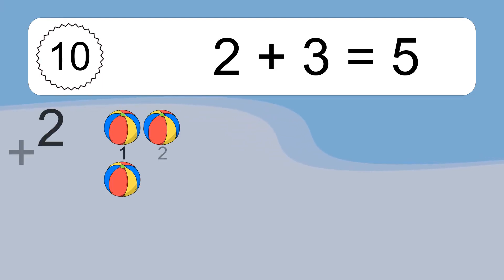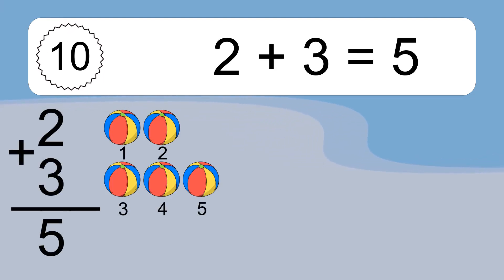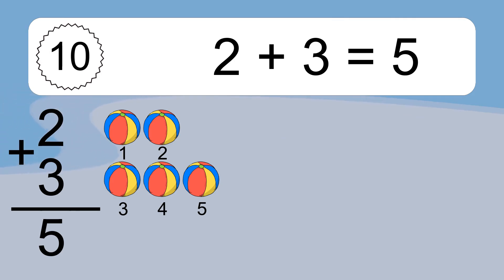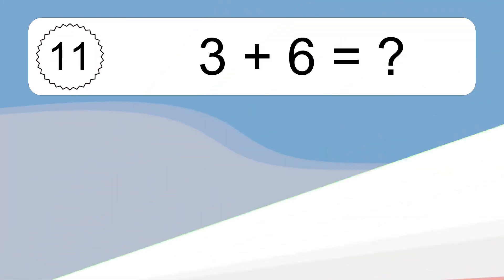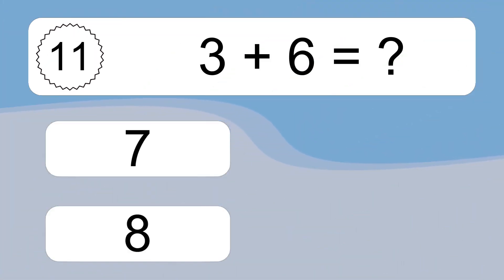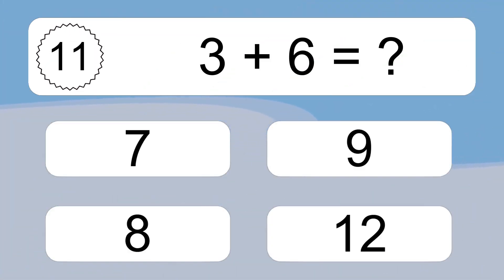2 plus 3 equals what? 2 plus 3 equals 5. Let's count it: 1, 2, 3, 4, 5.